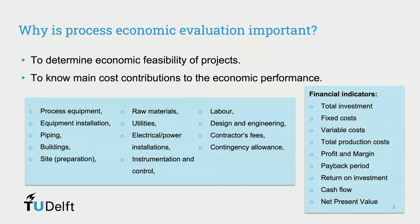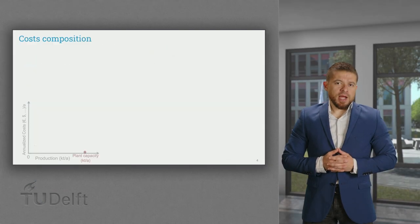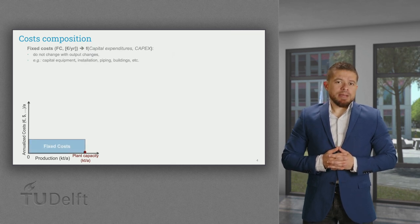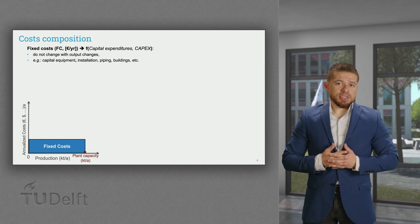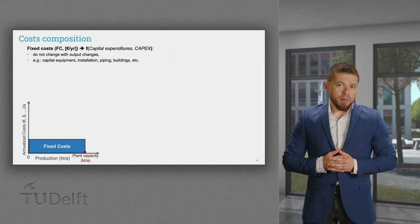We can also calculate several financial indicators that are commonly used for decision making. Let's take a look at the cost composition. For a bioprocess facility with a specific plant capacity, we can first account for the fixed cost, which depends on the acquisition and installation of capital goods. These are known as the capital expenditures, CAPEX.